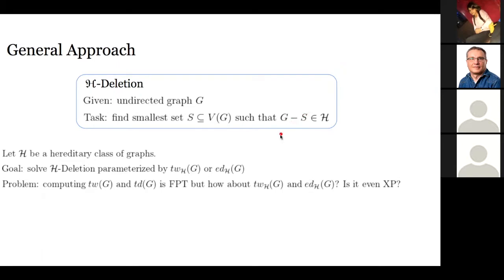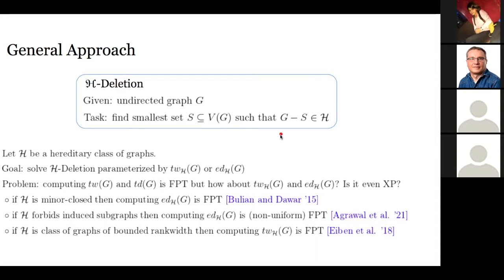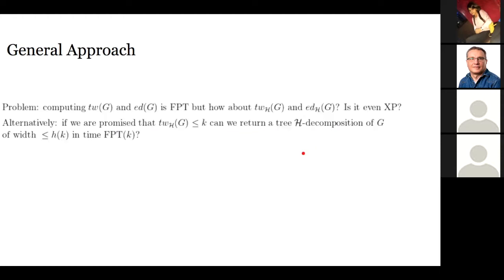There was a recent line of research focused on FPT algorithms for computing these measures, with results for minor-closed classes, classes forbidding certain subgraphs, and classes of bounded rank width, plus more results announced very recently. However, these results relied on heavy algorithmic meta-theorems, making the dependency on the parameter extremely large and sometimes non-uniform.